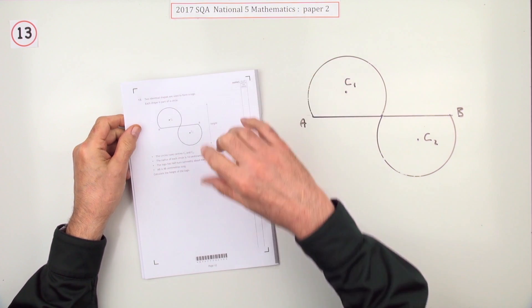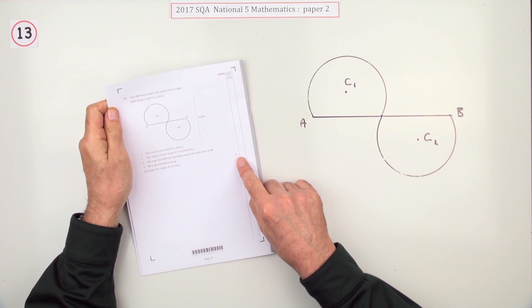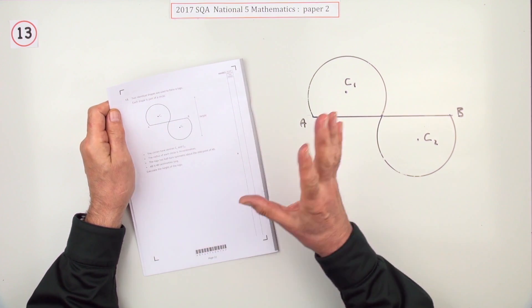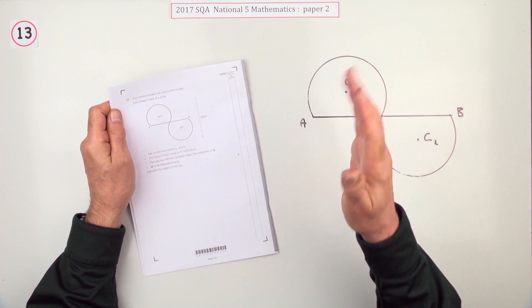Number 13 from paper 2 of the 2017 National 5, worth four marks. You can see the straight line immediately chords in a circle. As soon as you see that chords in a circle, think triangle, triangle.